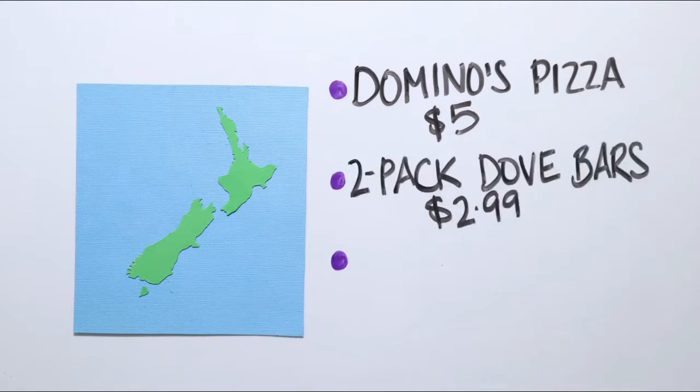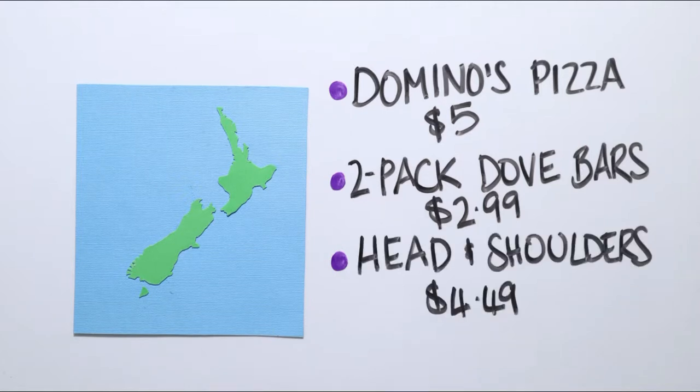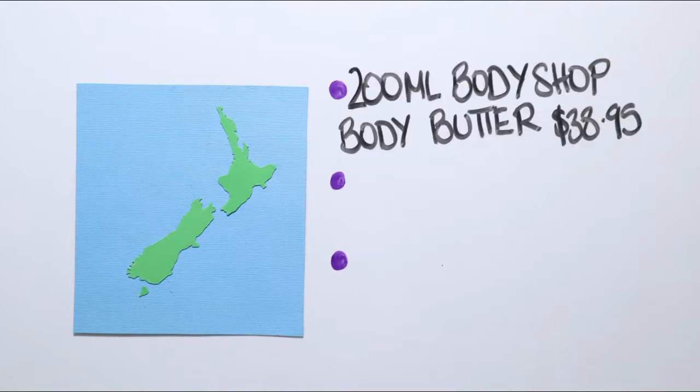A 2-pack of Dove Beauty Cream Bar is $2.99. Head & Shoulders shampoo or conditioner is around $4.49 per bottle. 200ml of Body Butter from The Body Shop is around $38.95.